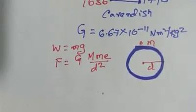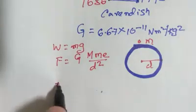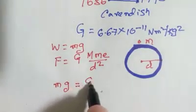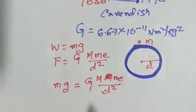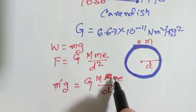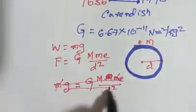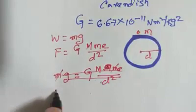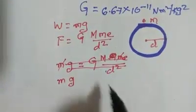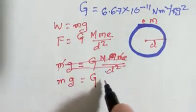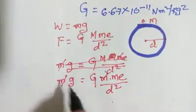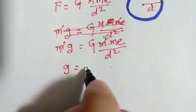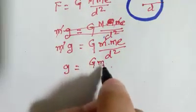Equating these two and removing the F, what we get is Mg equals to G times m times Me whole divided by d squared. We cancel both the m's out, and rewriting this gives us: g equals to G times Me divided by d squared.